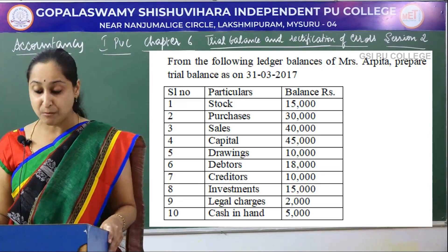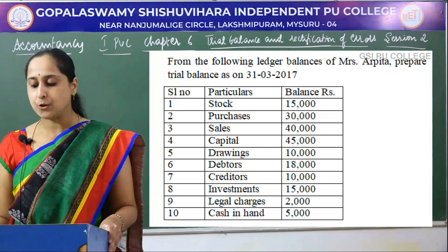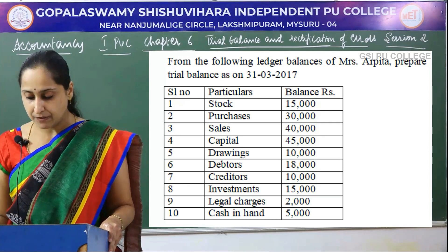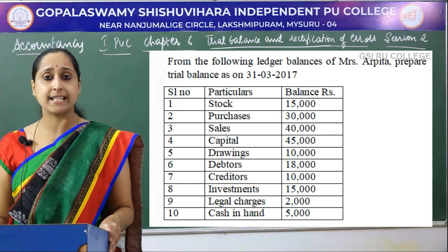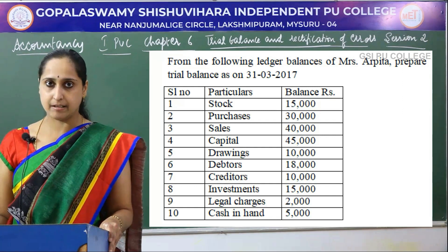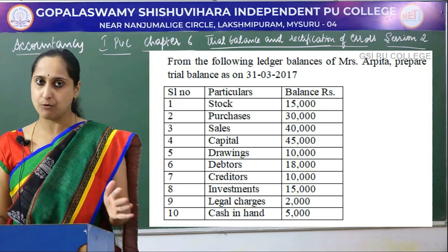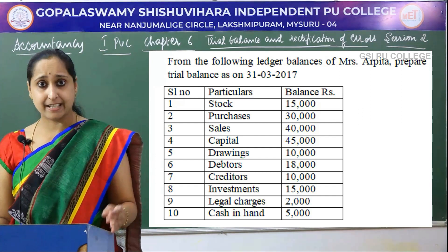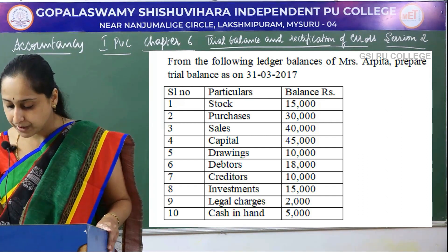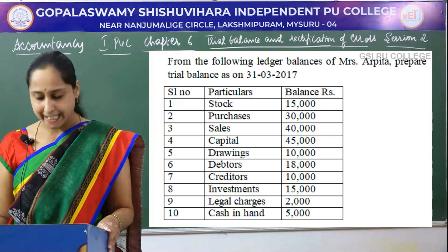Now let's do one more problem. From the following ledger balances of Mrs. Arpita, prepare a trial balance as on 31st March 2017. They have given: stock 15,000 — stock is an asset, we have to record it in debit column. Purchases — it is an expense, we have purchased goods, so we have to record it in debit column. Sales — it is an income, we have to record it in credit side. And capital — capital always shows credit balance, so we record it in credit column.